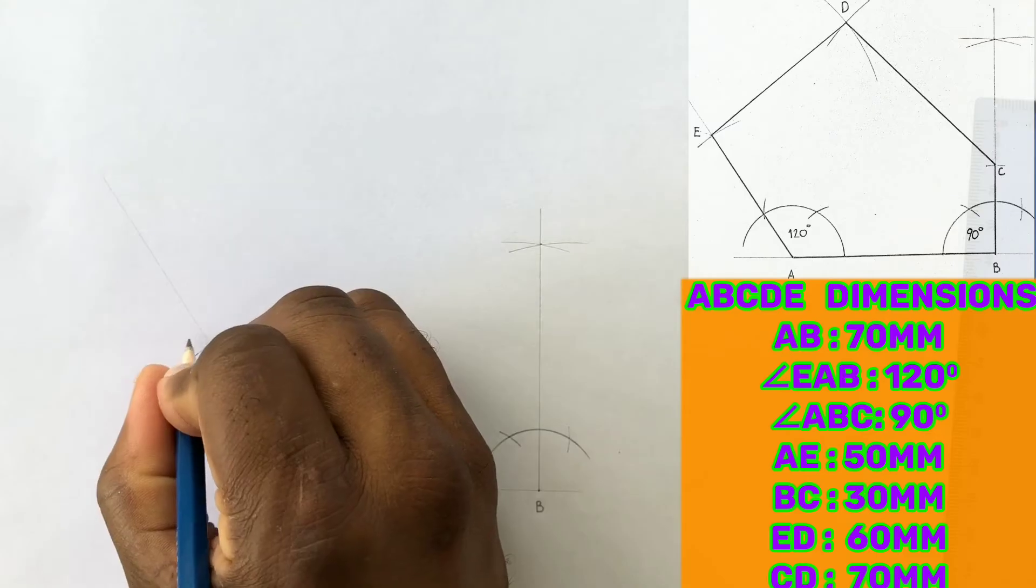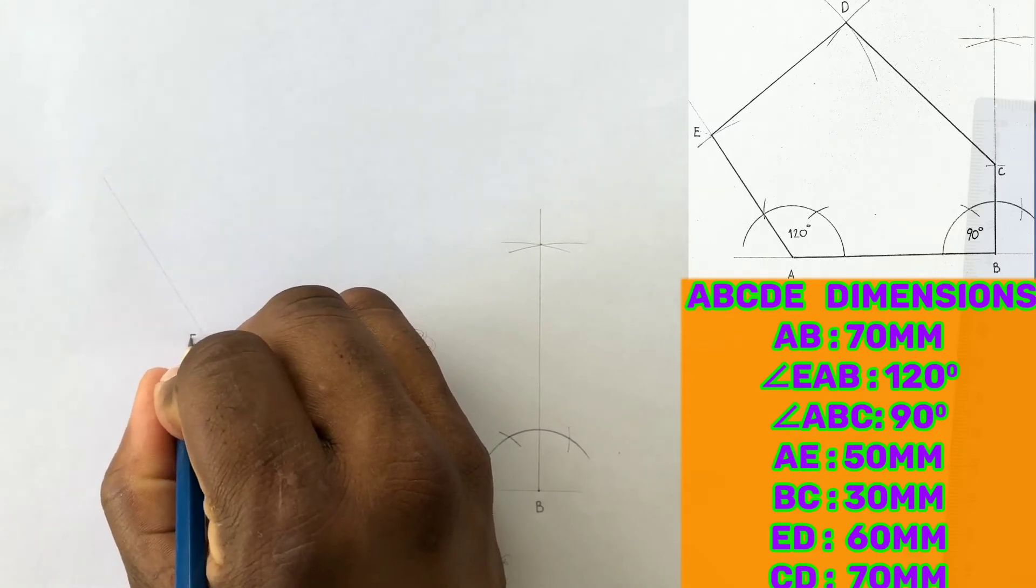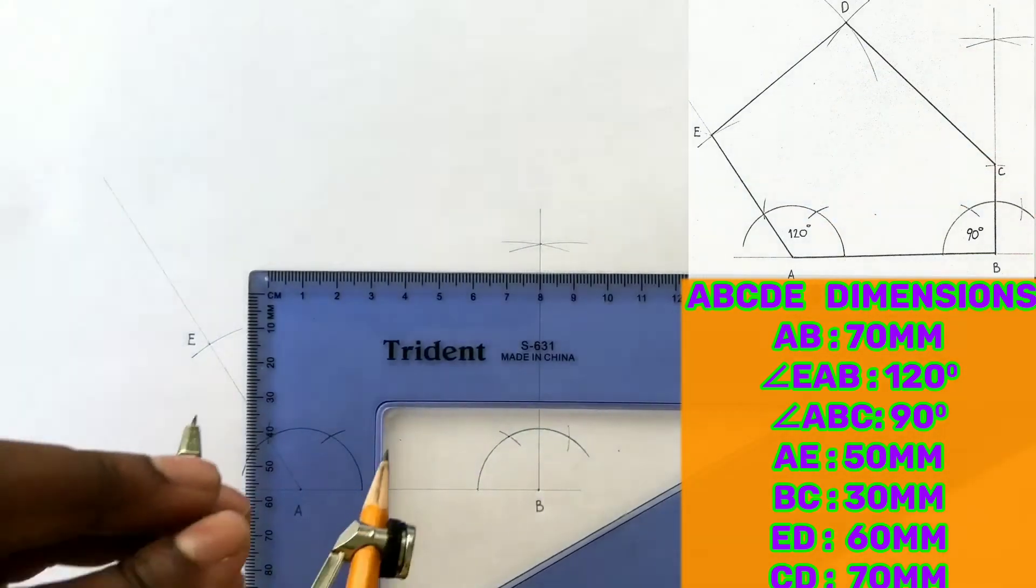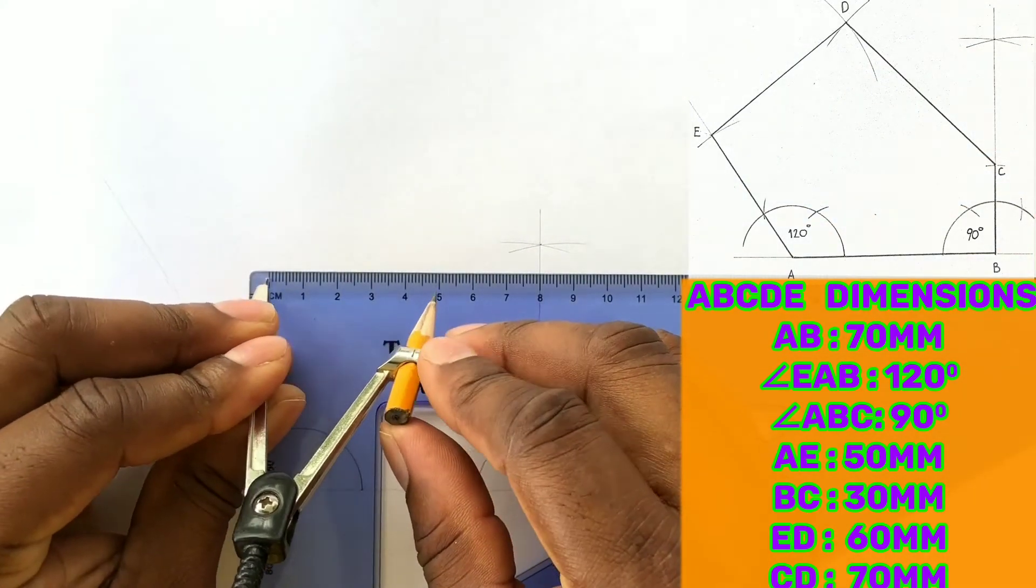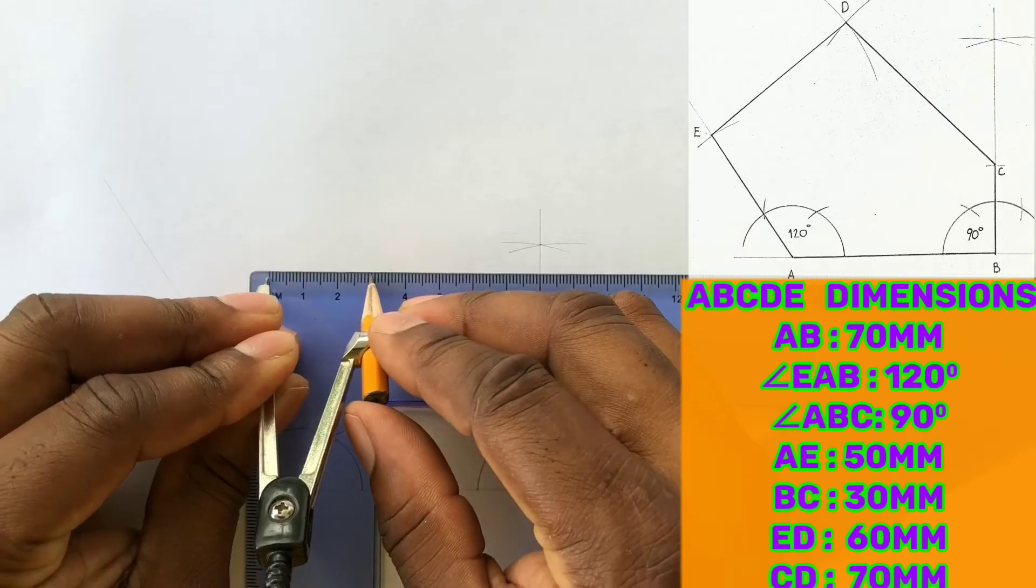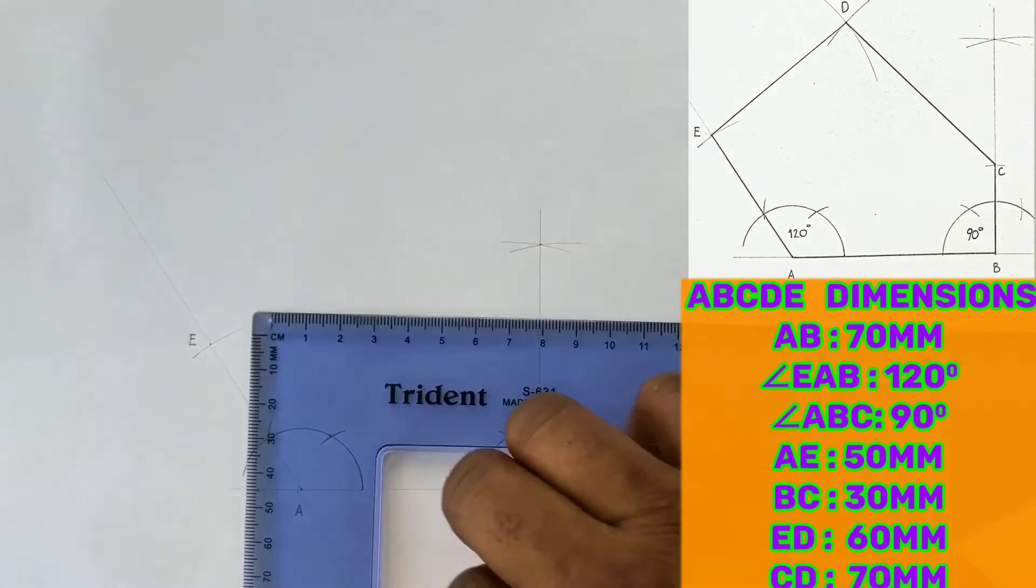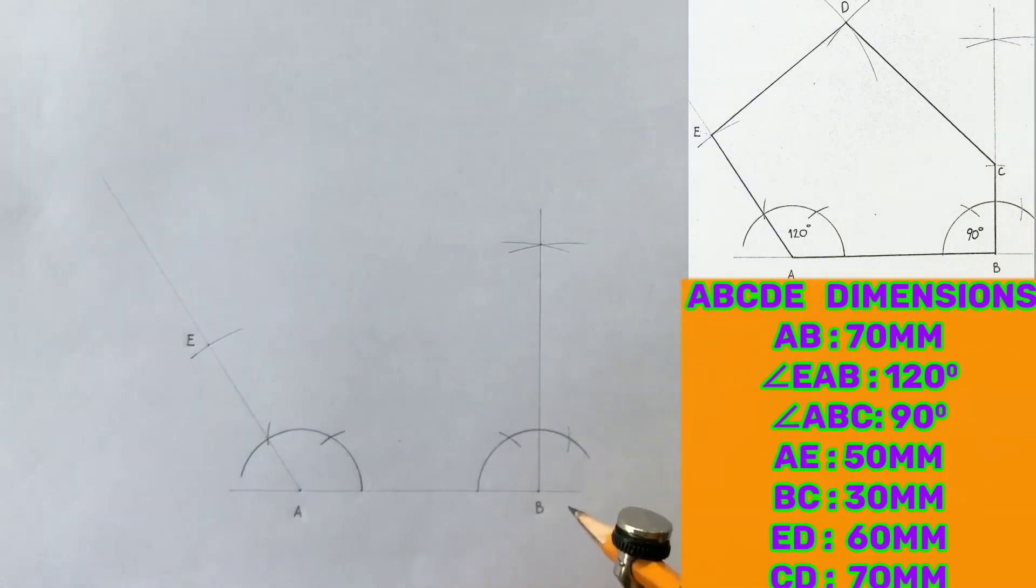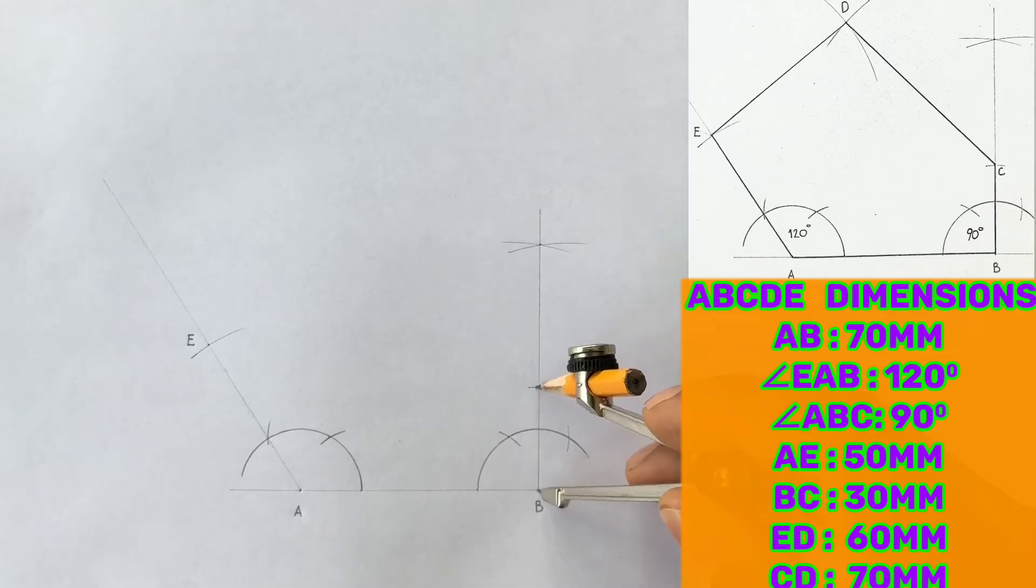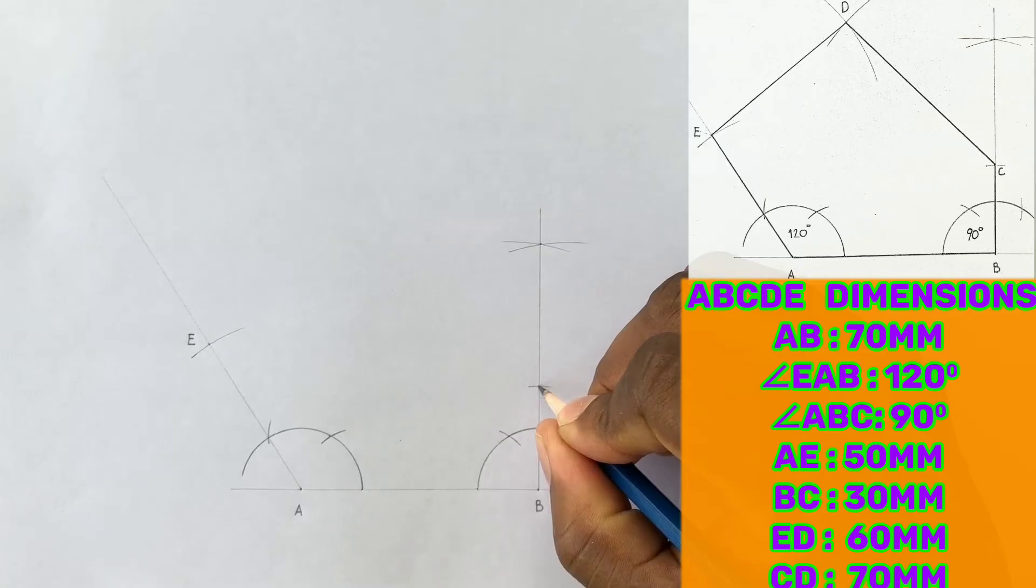Now given that the length from B to C measures 30 millimeters, open your compass to a radius of 30 millimeters, and from point B scribe an arc to intersect this line. Identify and label your intersection C.